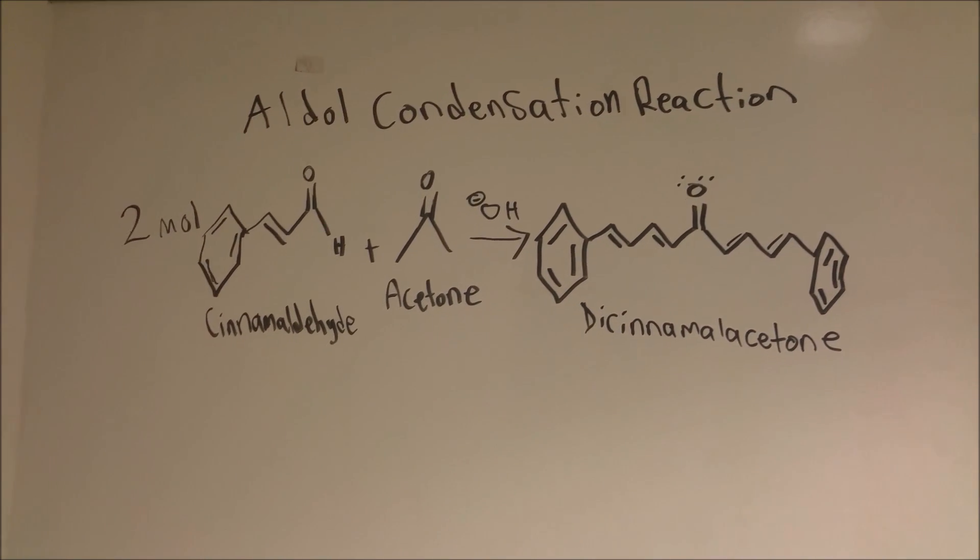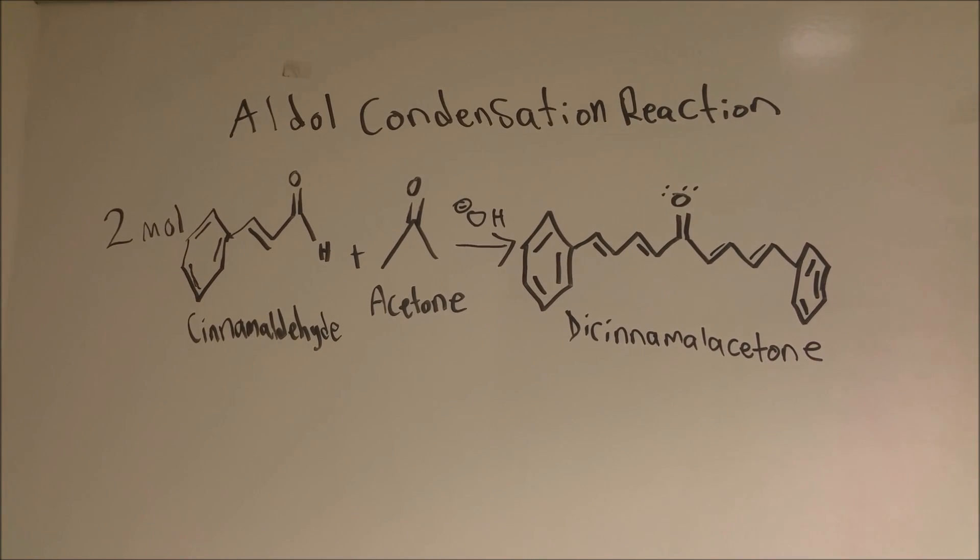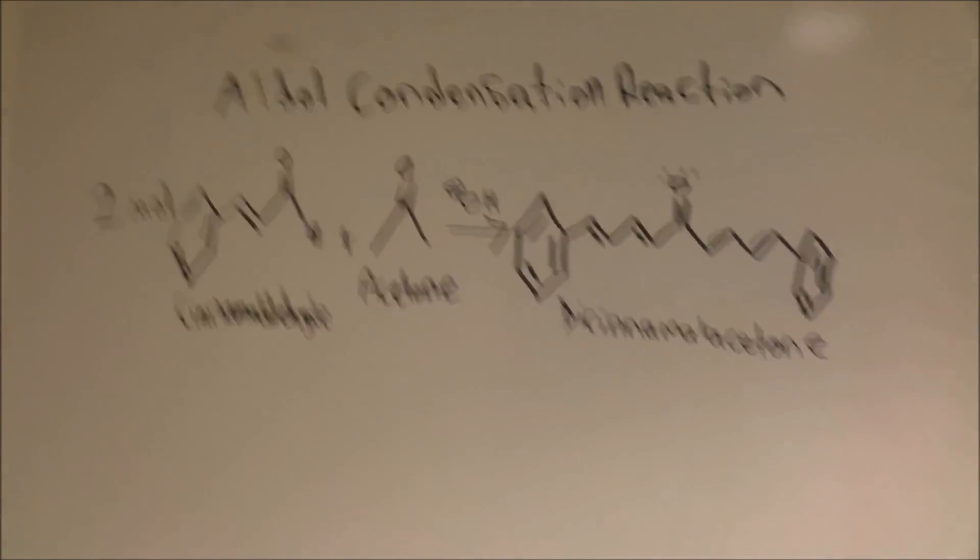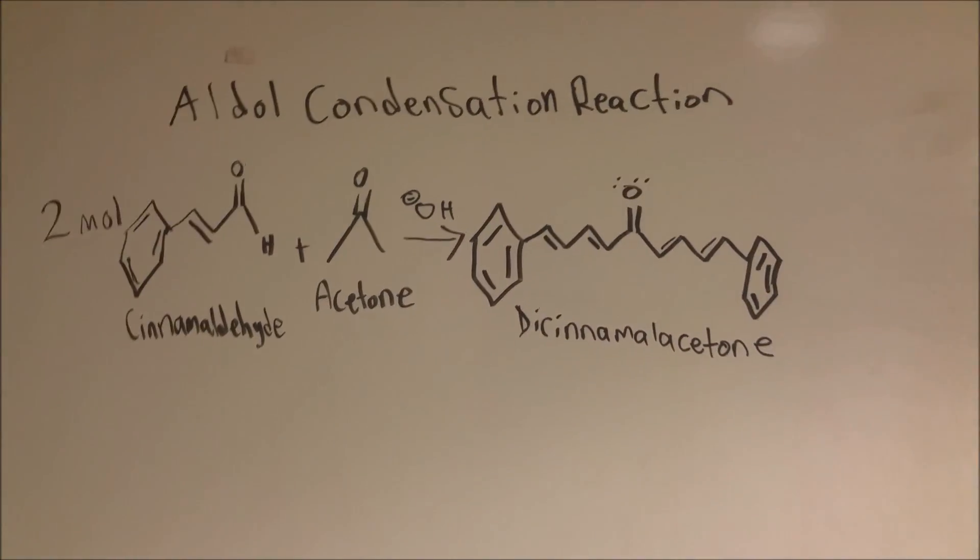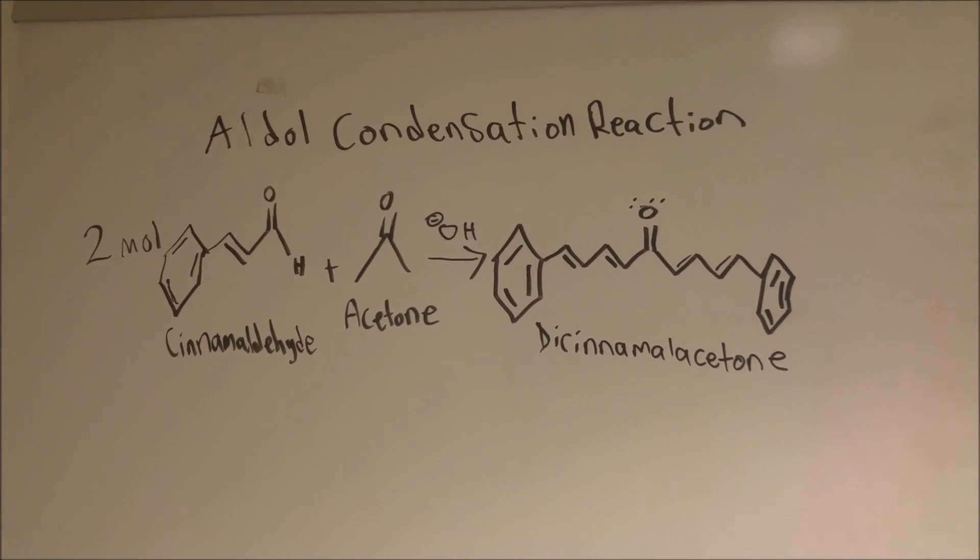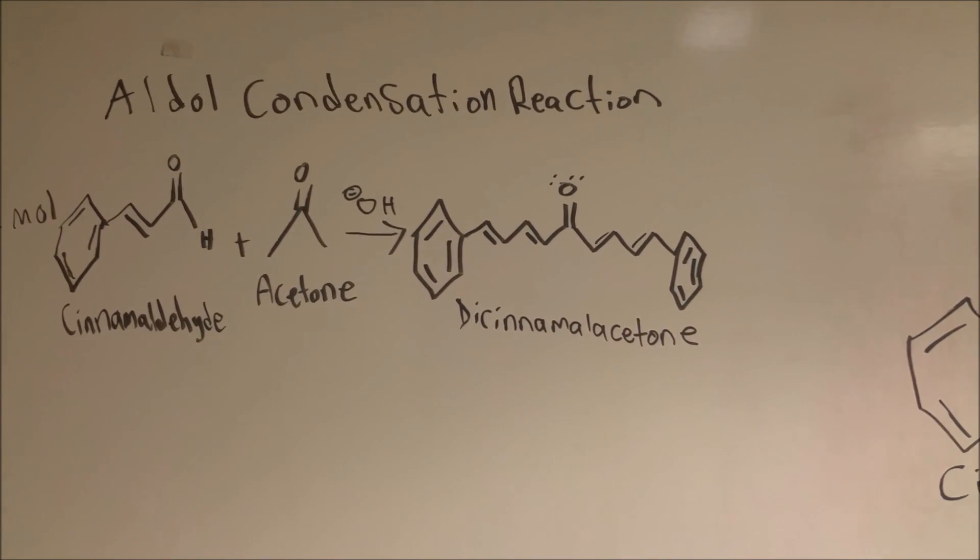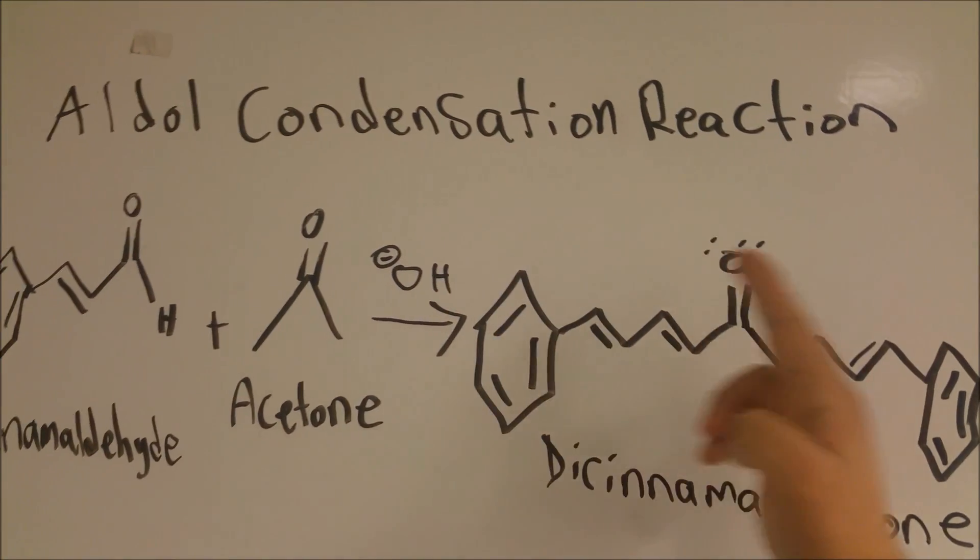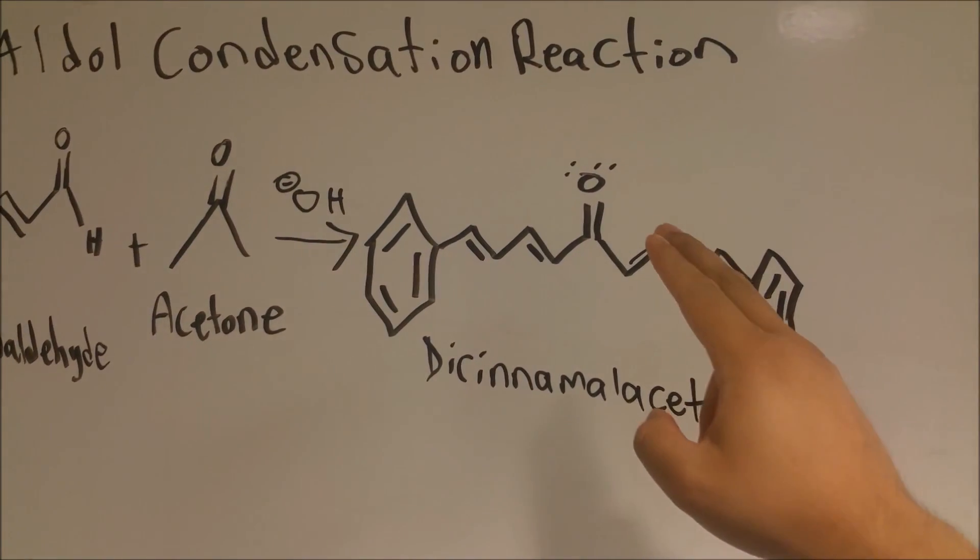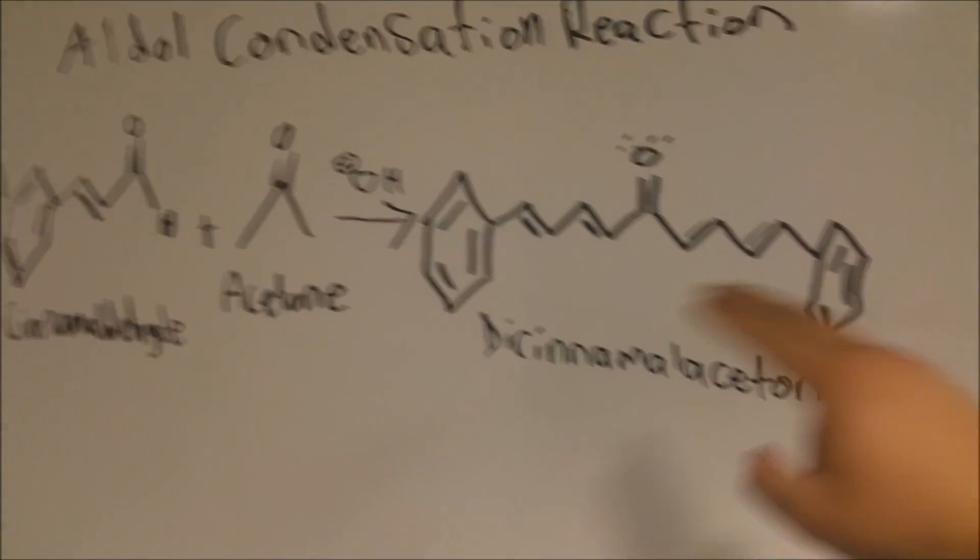Two moles of cinnamaldehyde react with acetone under a base catalyst to form dicinnamalacetone. Now remember, 2 moles of cinnamaldehyde are used in this reaction. I want to stress that because 1 mole reacts with acetone to create 1 half of this molecule, and then that 2nd mole forms the other half of the molecule. Why is that important? You'll see a little later.